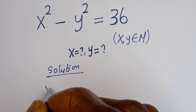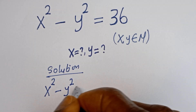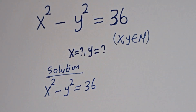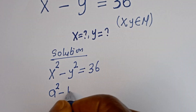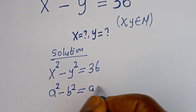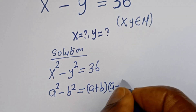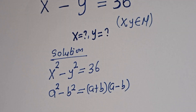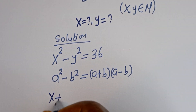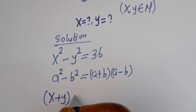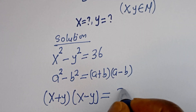Here we have x squared minus y squared is equal to 36. Now, take note that if you have a squared minus b squared, this is equal to (a + b)(a − b). Then this can be written as (x + y)(x − y) is equal to 36.